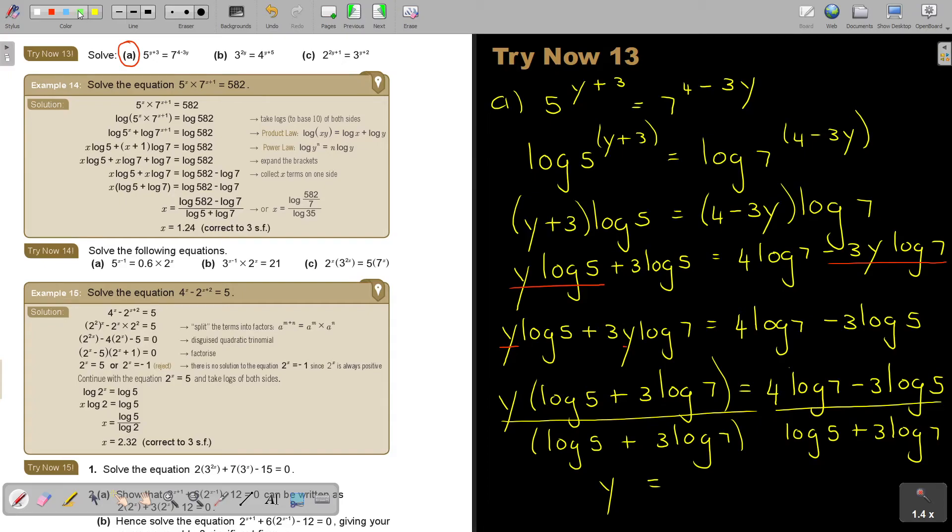So let's start. Make a bracket. As I said, for me I prefer if there's a bracket and there's a bracket. Open the bracket, then press 4 log 7 minus 3 log 5, close the bracket, divide, bracket, log 5 plus 3 log 7, close the bracket. And I get that Y is equal to 0.397. Always remember, correct to 3 significant figures.